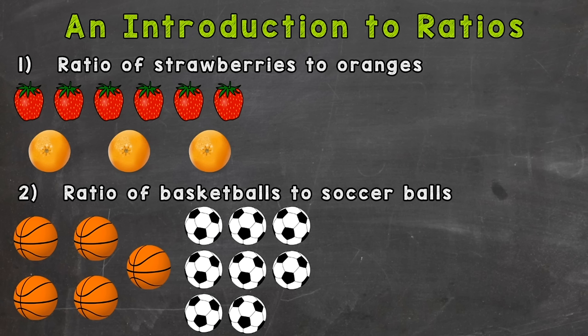For example, number one, we have the ratio of strawberries to oranges. So we're going to compare the quantity or number of strawberries to the quantity or number of oranges. And there's a few different ways we can write these ratios out.